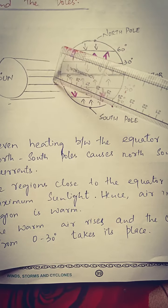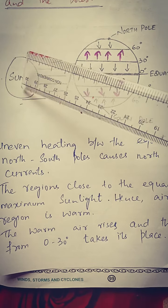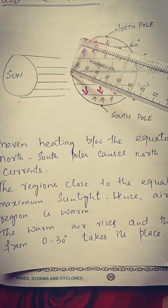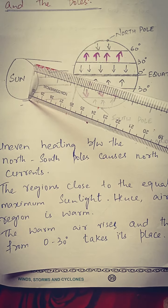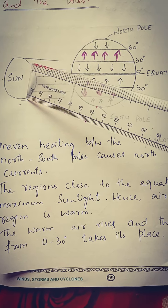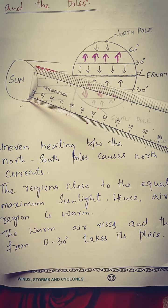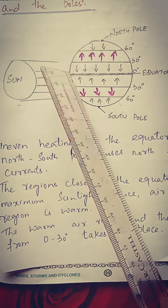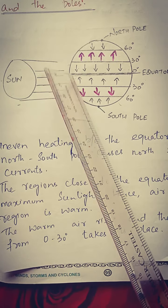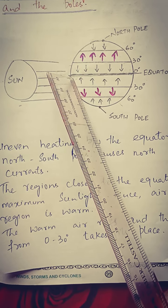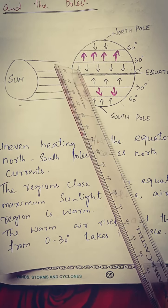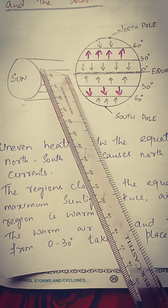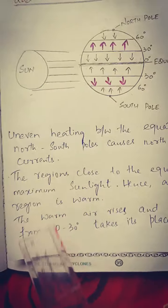Ab yeh jo equator hai, yahaan pe jo suraj ki light hai, yeh directly fall hoti hai. Iska matlab kya hoga — yahaan pe jo hawa hai wo garam hoti hai. Kyunki suraj na sirf humen roshni deta hai, balke roshni ke saath saath humen heat bhi deta hai. Suraj ki jo sunlight hai, equator pe directly fall hoti hai, jiski wajah se equator ke paas jo areas hain yeh garam hote hain, aur usi ki wajah se yahaan pe jo hawa hoti hai wo bhi garam hoti hai.